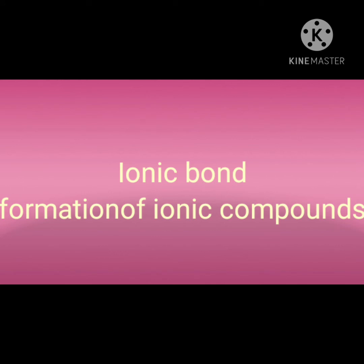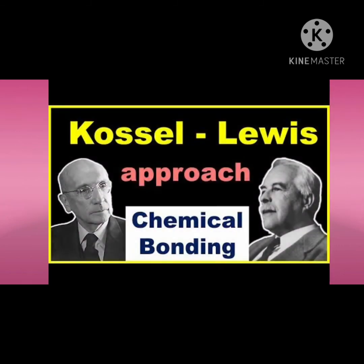There were a number of attempts to explain chemical bond formation between atoms in terms of electrons, but a satisfactory explanation was given by Kossel and Lewis in 1916. They gave this concept independently. The basis for this theory was valence in terms of electrons. They provided a logical explanation of valence based on the lack of chemical activity of noble gases, which led to the proposal of the octet rule.